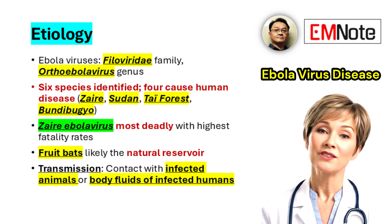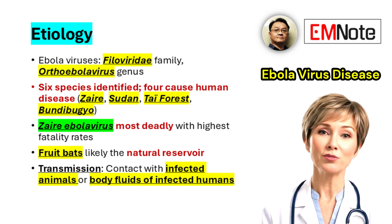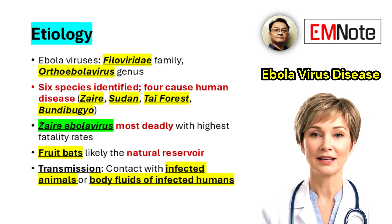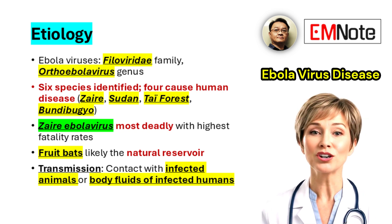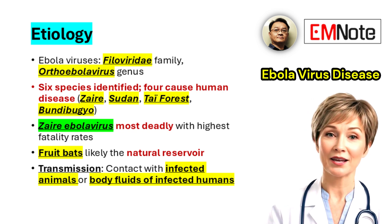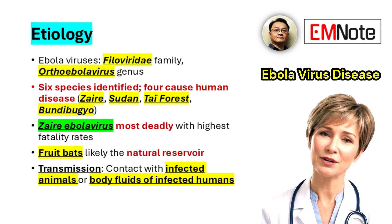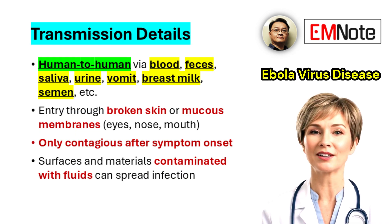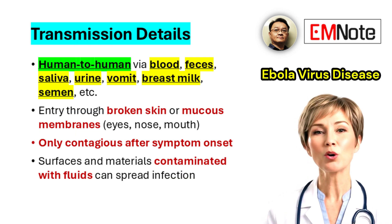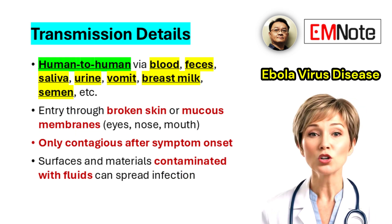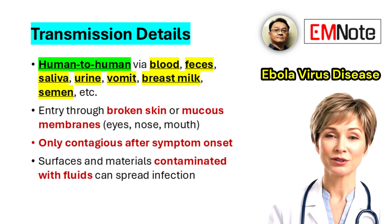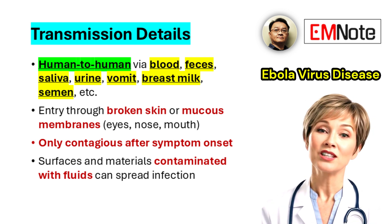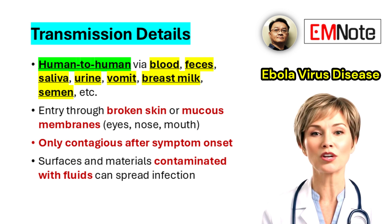Human-to-human transmission occurs through direct contact with the blood, secretions, or other bodily fluids of infected individuals, or with contaminated surfaces such as bedding and clothing. Bodily fluids capable of transmitting the virus include blood, feces, saliva, urine, vomit, breast milk, amniotic fluid, semen, and vaginal fluids.